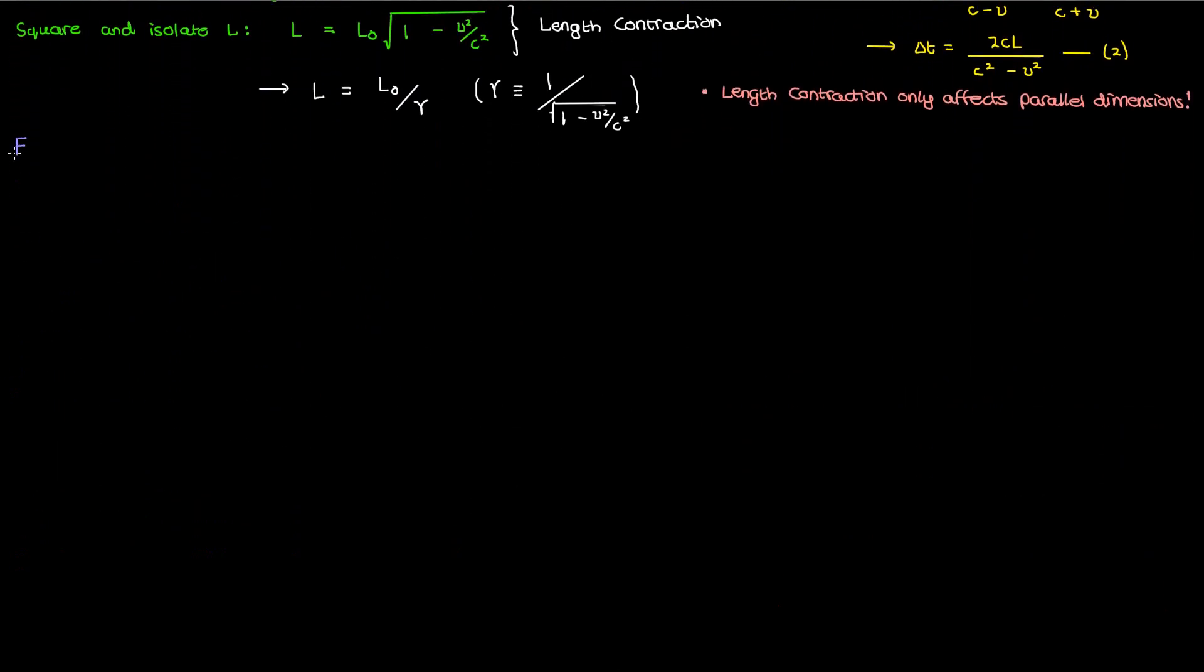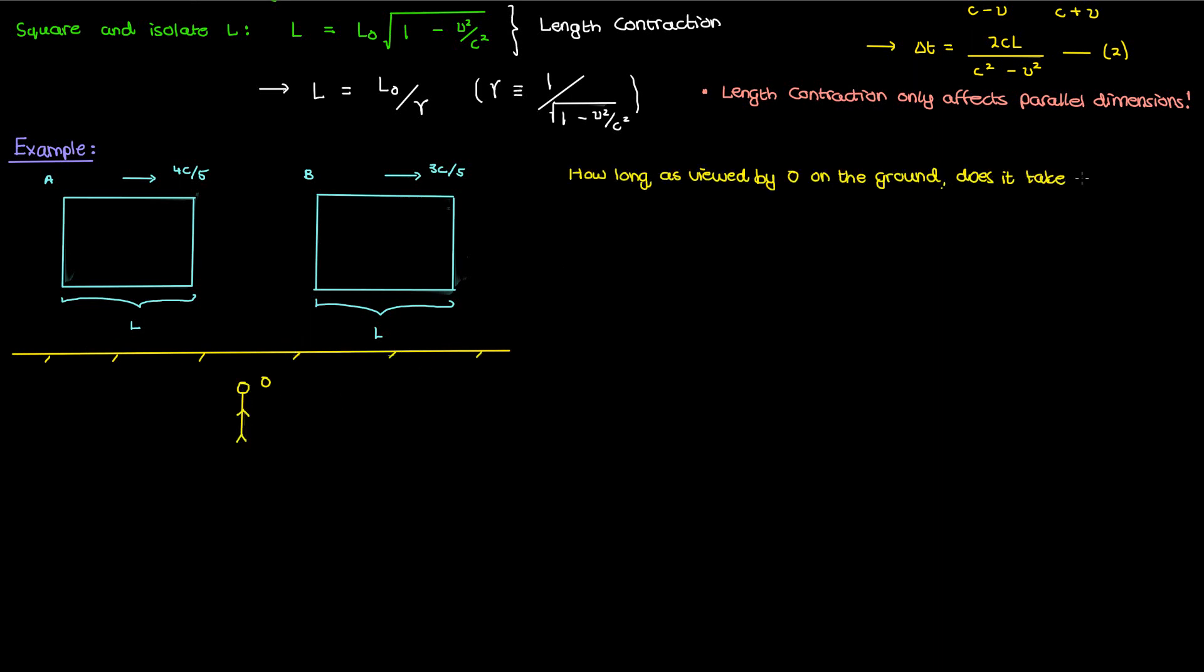Let's solidify our understanding of length contraction by going through an example problem. Suppose I have two trains A and B with the proper length L traveling in the same direction, with train A going at 0.8C and train B going at 0.6C. According to a neutral observer O on stationary ground, how long will it take for A to completely overtake B?